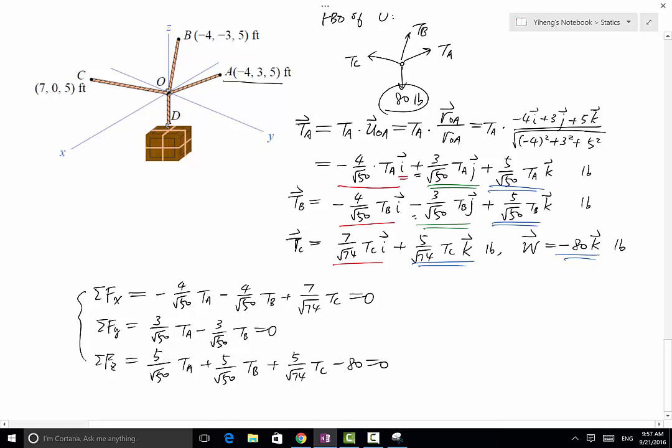So now, those are our three equilibrium equations. We have three scalar unknowns: TA, TB, TC. We can solve for all three of them. I'll probably start with equation number two, because from here you can easily tell that TA equals TB. That helps you reduce an unknown. Now you can use equations one and three—that's two equations with only two unknowns. Then you can solve for your unknowns.